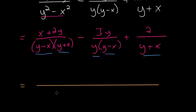And like I said, the denominator is y minus x times y plus x multiplied by y. So this first term, notice it already has y minus x and y plus x. So we just have to multiply this top by y. So we have y times x plus 2y,